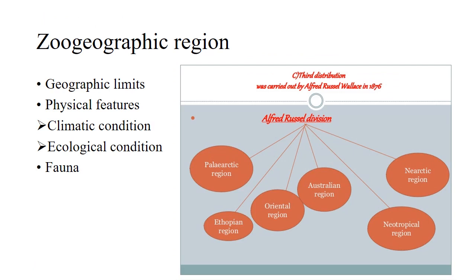As we discussed in the previous lecture, while we study a zoogeographic region we focus on three important points. The first one is the geographic limit. The second one is the physical features, where we discuss the climatic conditions and ecological conditions, and at the end the most important thing is the faunal feature of the region.